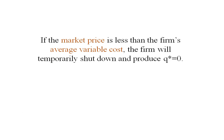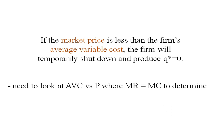What we need to keep in mind is if the market price is less than the firm's average variable cost, then the firm will temporarily shut down and produce output of zero. We'll have to look at the average variable cost and the price where MR equals MC to determine this.